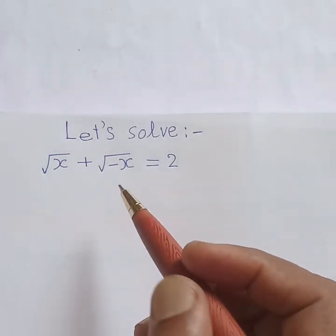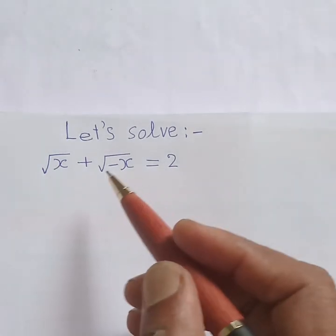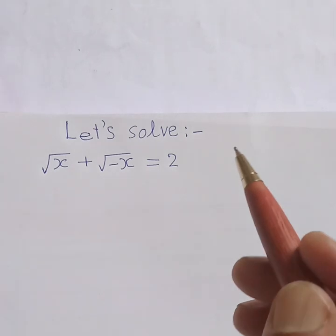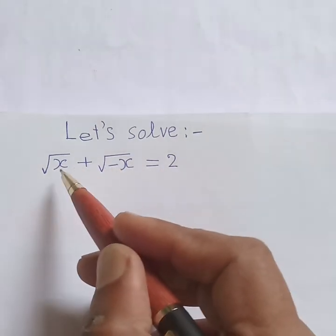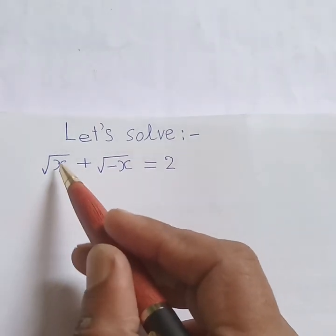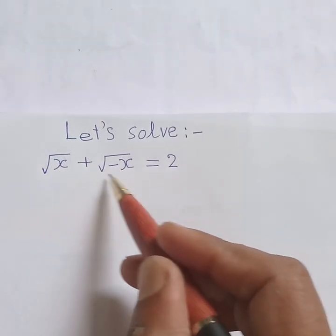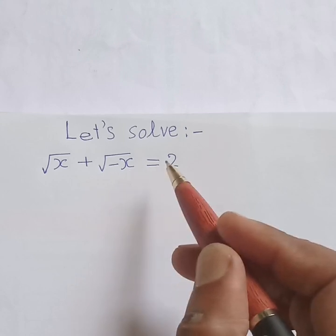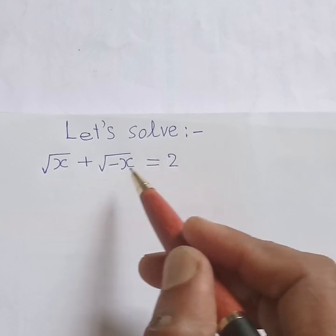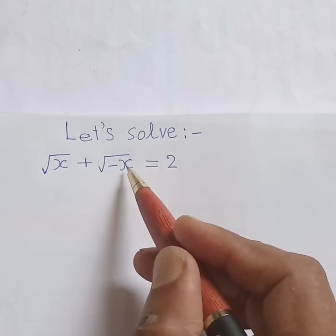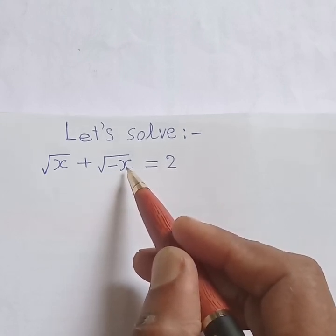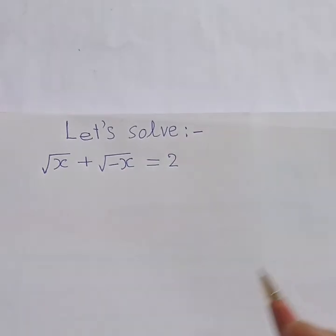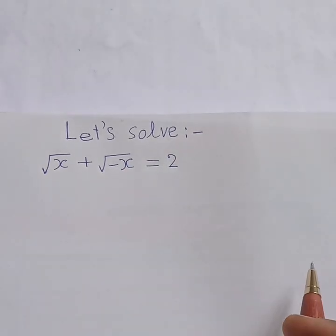Hello friends, welcome to Solve This International Mathematics. The problem is: root over x plus root over minus x is equal to 2. Note that root over minus x is an imaginary quantity. Solution.